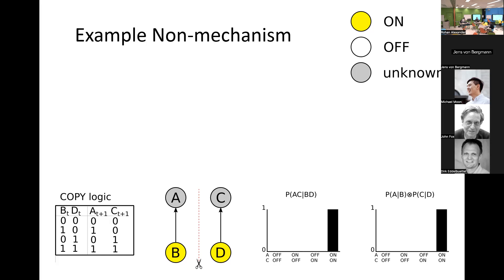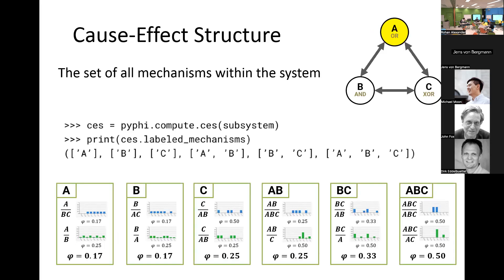The PyPhi software runs this idea of what we call a cause-effect structure — mechanisms that have effects in the system or have causes in the system, describing where they're going or where they came from. You use the software to generate the cause-effect structure and it tells you: here's A and here's what A does, here's B and what B does, A and B together do something, B and C together do something, but A and C is reducible and doesn't do anything for the system. In that way, I can pick out a bunch of mechanisms and explore what they're doing for the system.